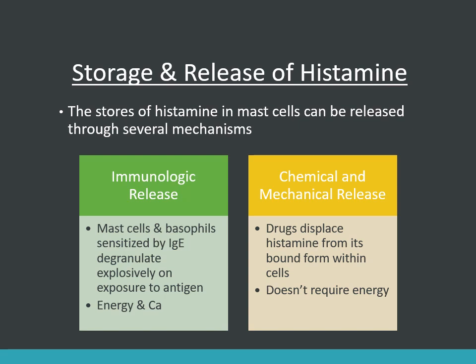The stores of histamine in the mast cells can be released through several mechanisms. The first is immunological release: mast cells and basophils sensitized by IgE antibodies on their surface degranulate explosively on exposure to an appropriate antigen; this requires energy and calcium. The second is chemical release: drugs displace histamine from its bound form within the cell, which does not require energy. Drugs such as tubocurarine and morphine cause this type of histamine release.